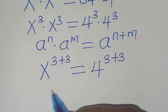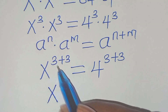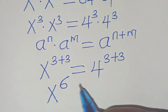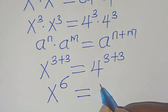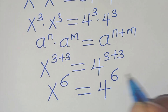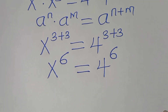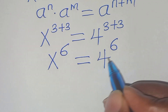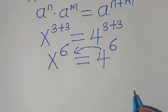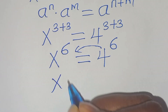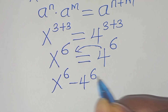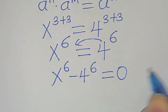Therefore, x to the power of 6 equals 4 to the power of 6. The next step is to take 4 to the power of 6 to the left-hand side, so that now we have x to the power of 6 subtract 4 to the power of 6, this is equal to 0.